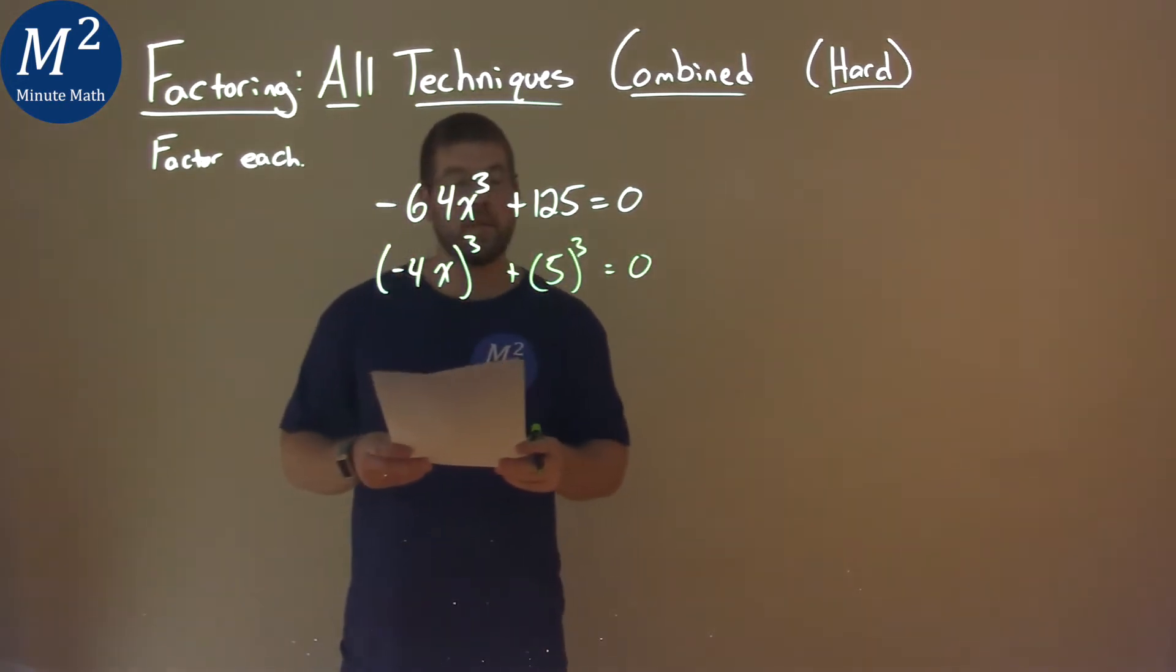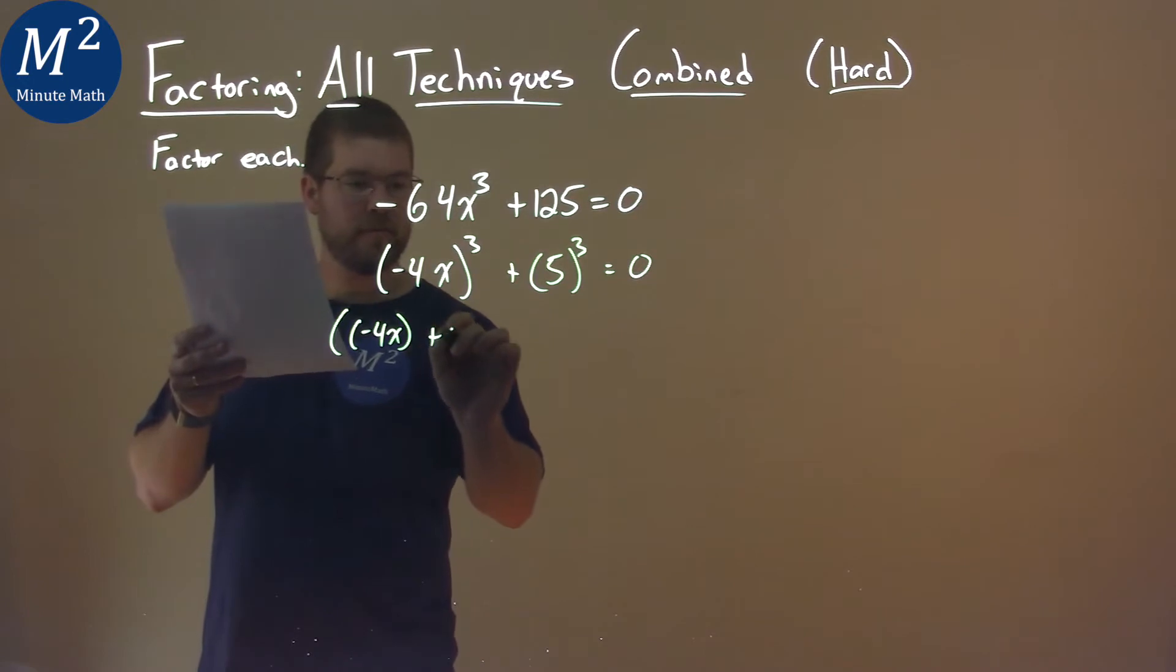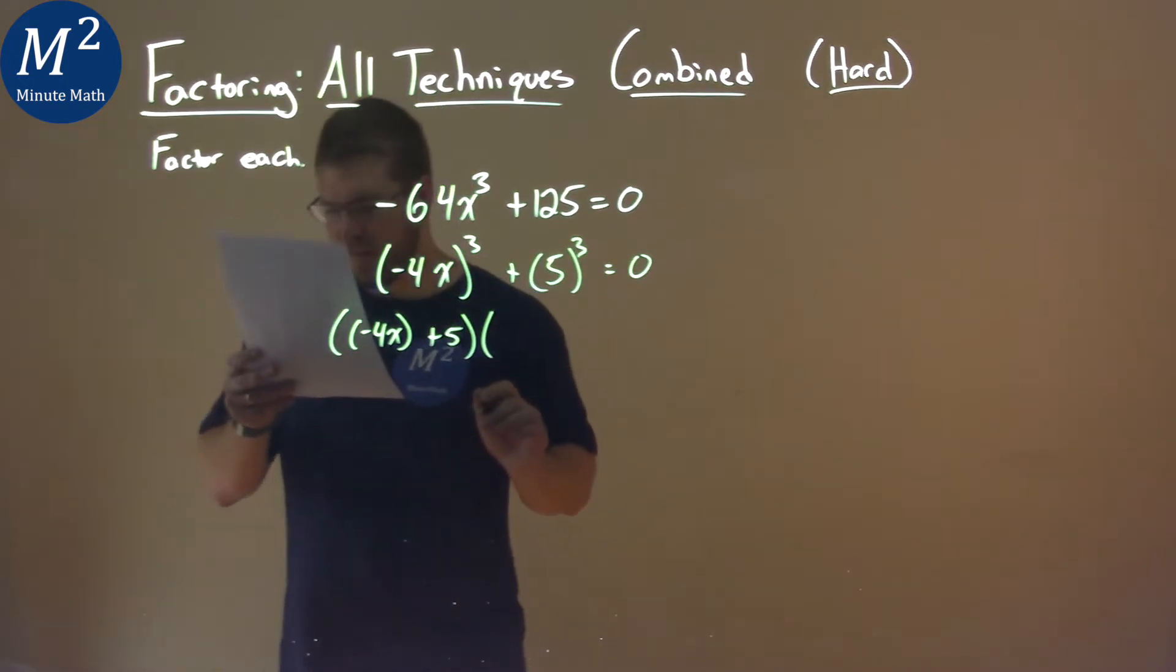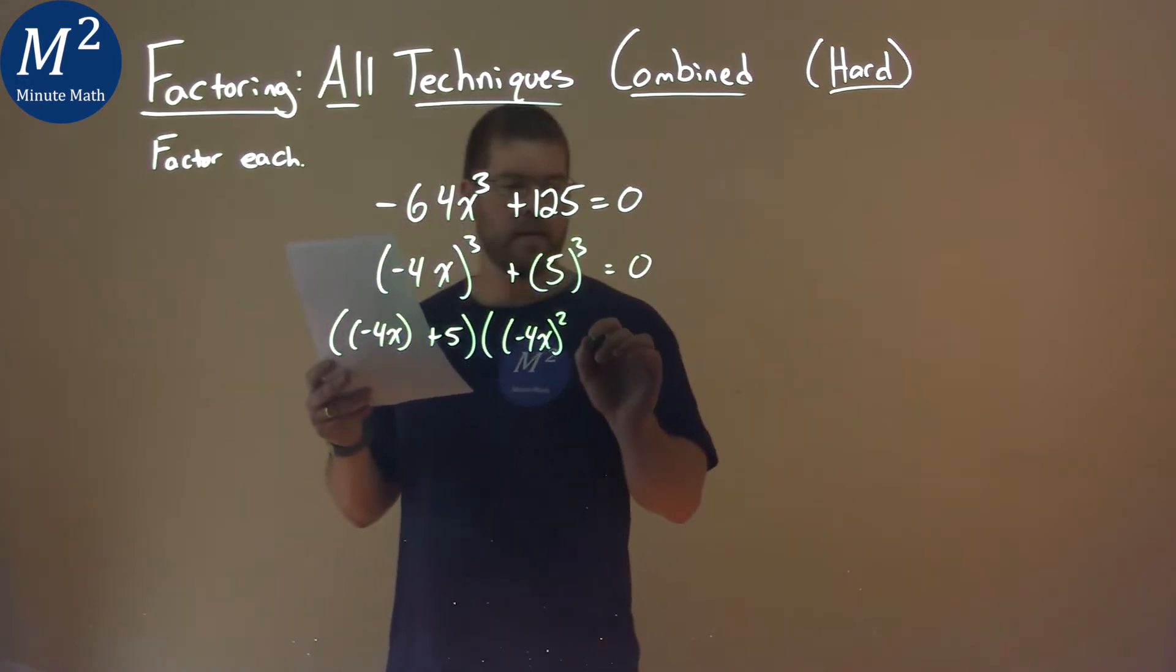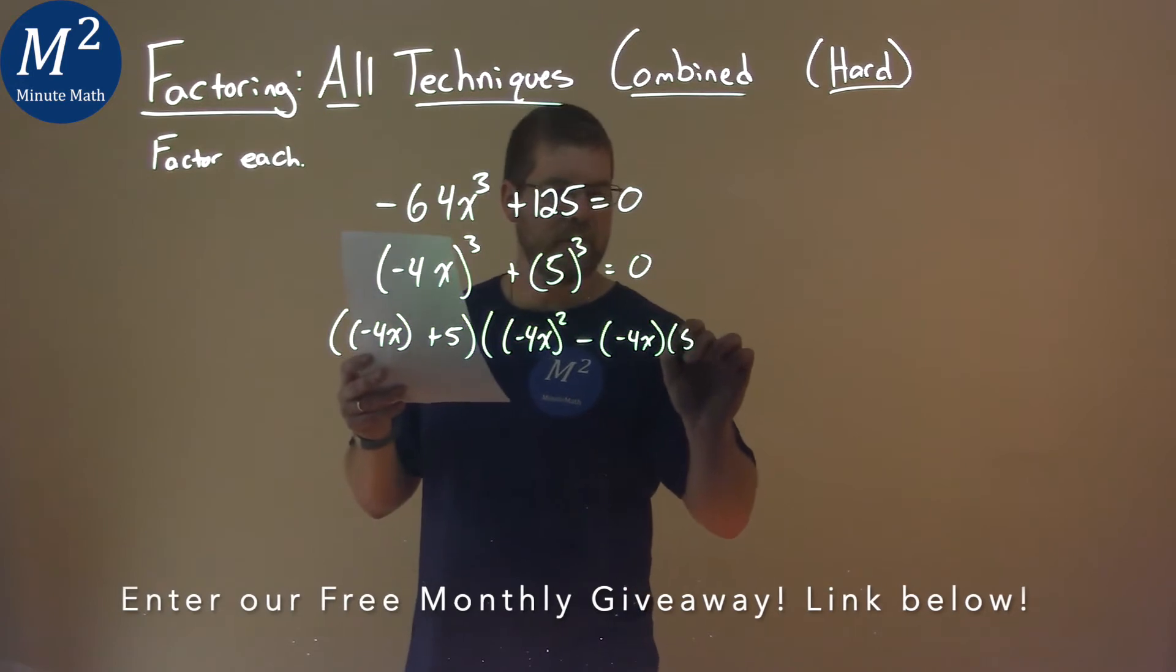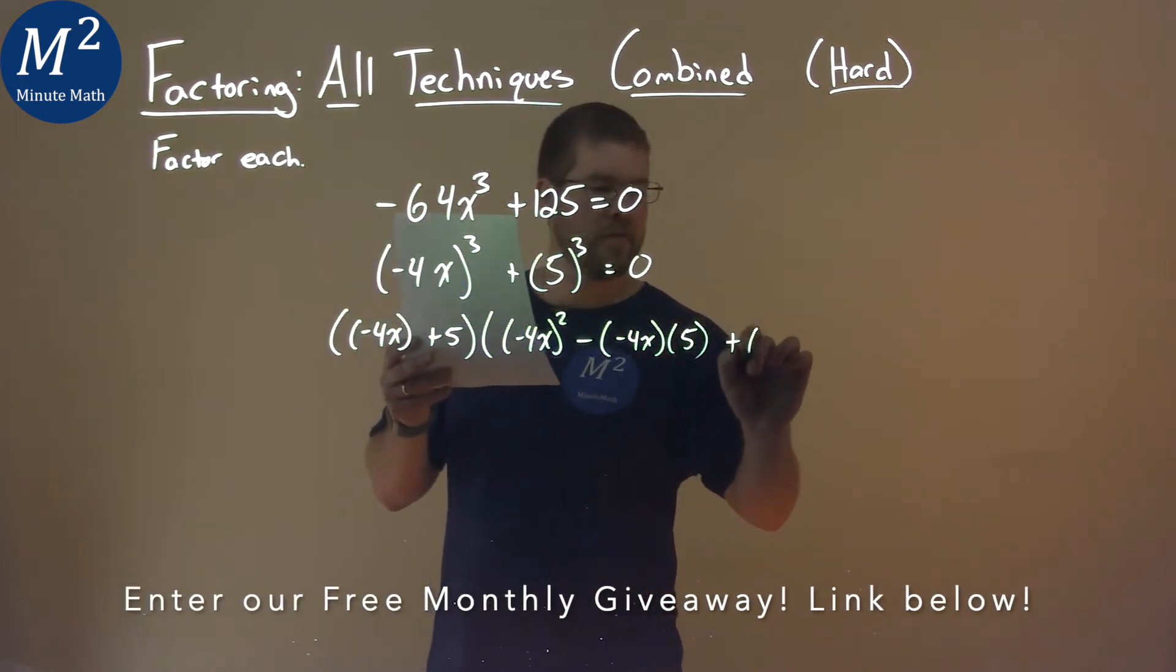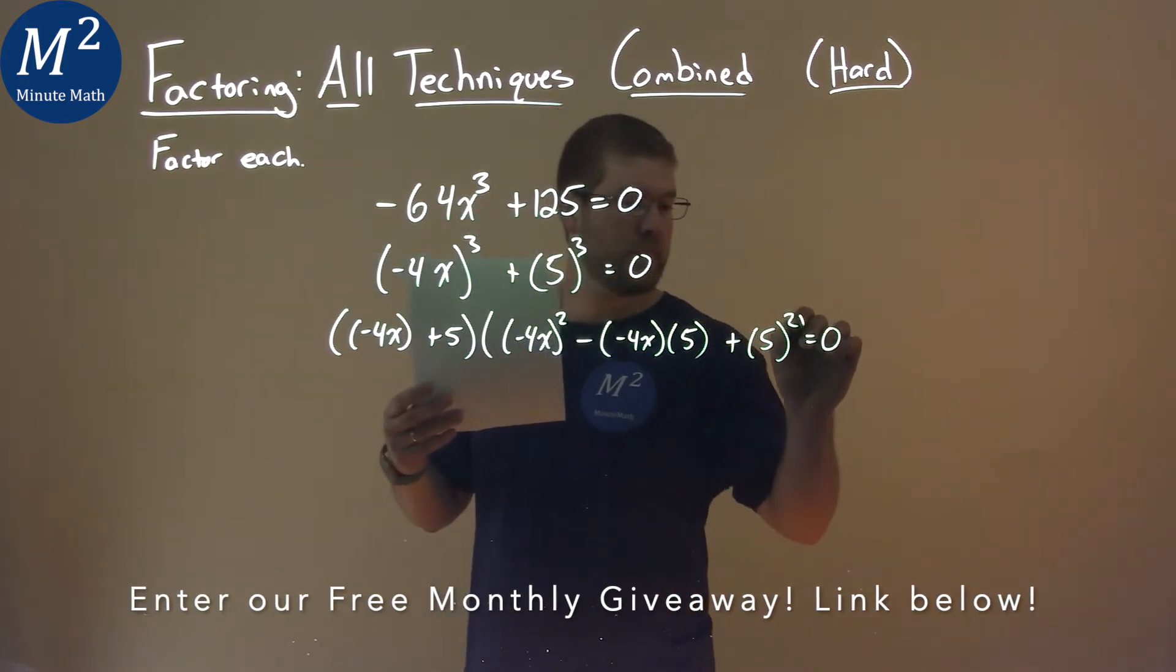So let's use the sum of cubes formula here. We take the first part, negative 4x, and we're going to add the 5. From there, we take negative 4x, we square it, and we're going to subtract our a value, negative 4x, times it by our b value, 5, and we're going to add our b value squared, 5 squared. All that's in parentheses.